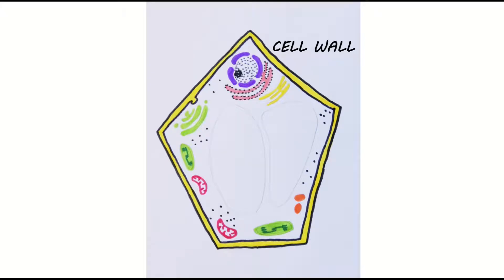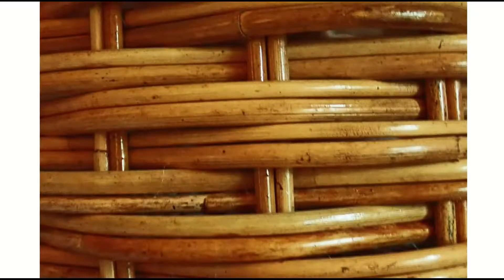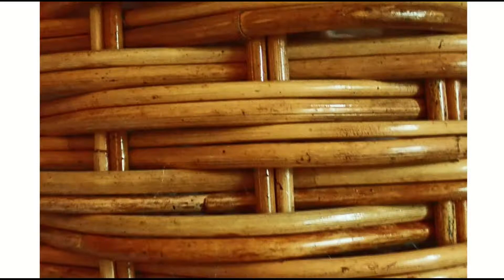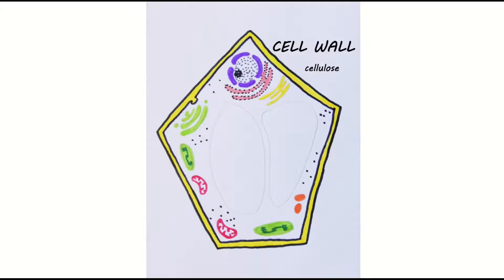Plant cells are surrounded by a cell wall. This is made of quite a rigid carbohydrate called cellulose. The cell wall provides structural support for the plant cell and if you zoom in really closely cellulose looks a bit like a wicker basket so there are lots of gaps between the cellulose molecules. This means that the cell wall can't control what enters and leaves the cell. That's the job of the cell membrane which sits just inside the cell wall.